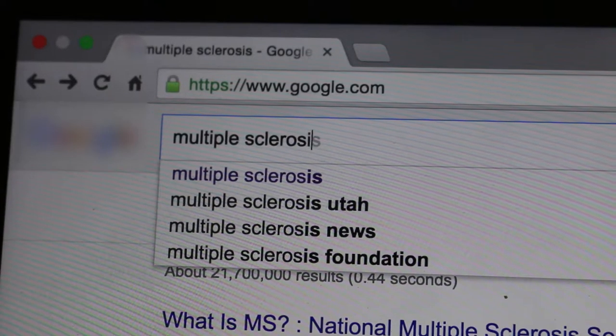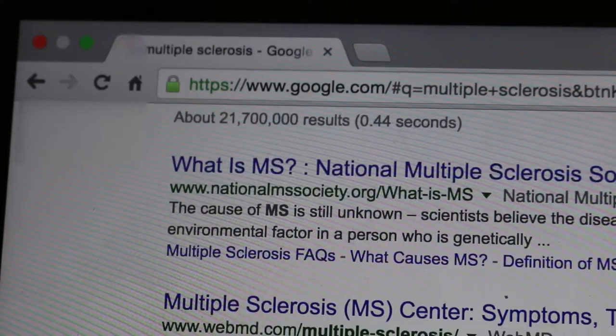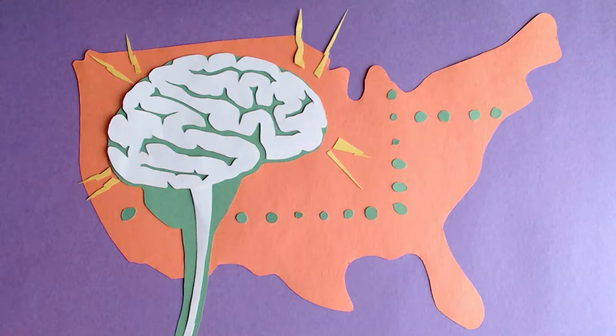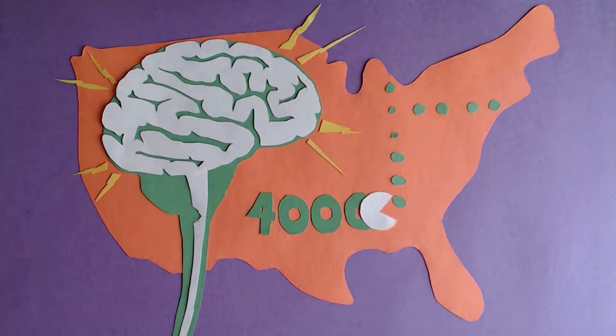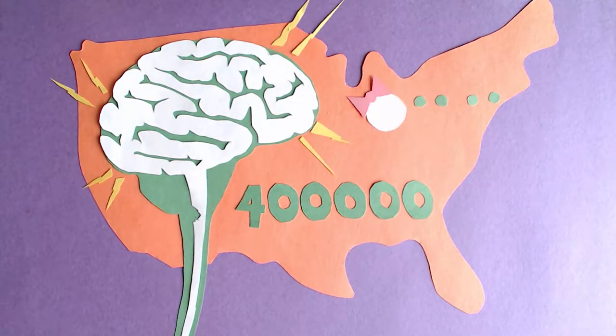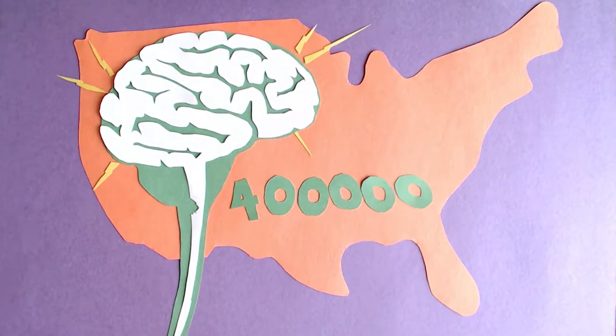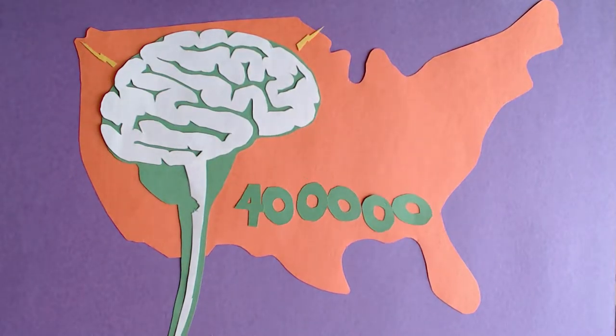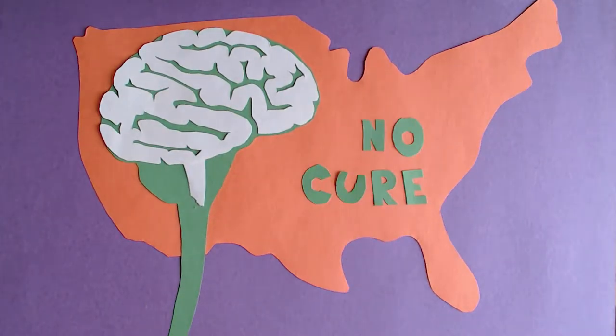Naturally, I began my research. My research revealed that MS is an autoimmune disease where the immune system attacks the central nervous system. There are over 400,000 people in the United States with the disease, and it is more common in women. So that made me feel manly. It is degenerative, which means it only gets worse. It is treatable, so the degenerative process can be slowed, but there is no cure.